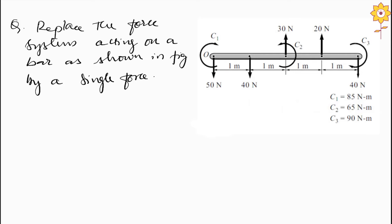Hello everyone, welcome to MES e-learning channel. In this video we will solve a problem on resultant of parallel force systems. On the screen you can see the problem: replace the force system acting on a bar as shown in the figure by a single force. We have many forces and a couple in the diagram, and we have to convert this into a single force.